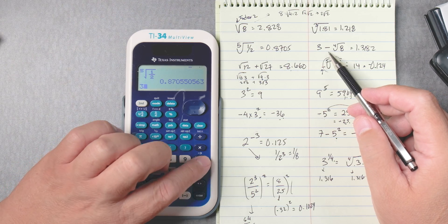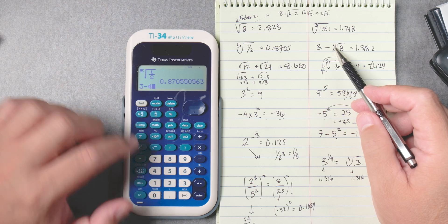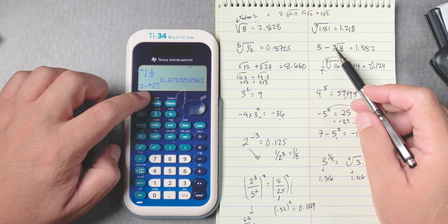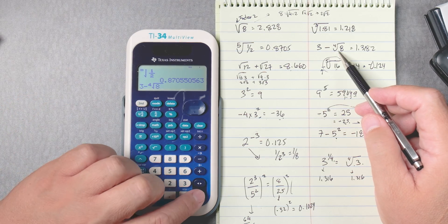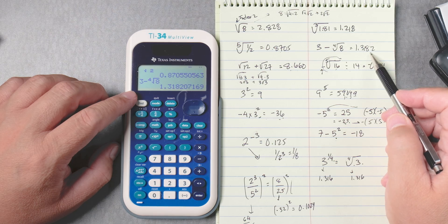Okay, next one. Let's do this one. This is 3 take away, and then we'll put 4 for the fourth root, second, caret, because that's going to give you the sub menu, 8, enter. 1.3182.